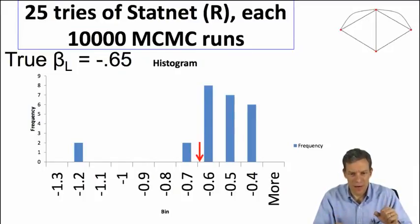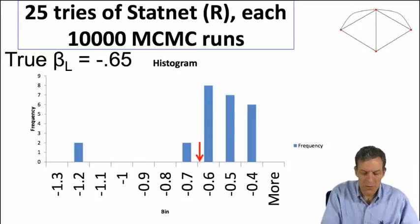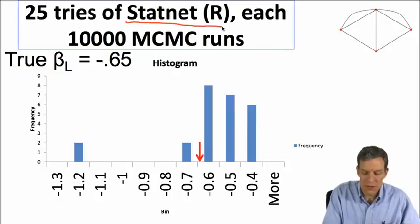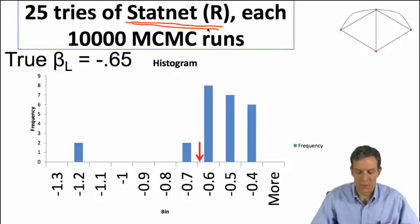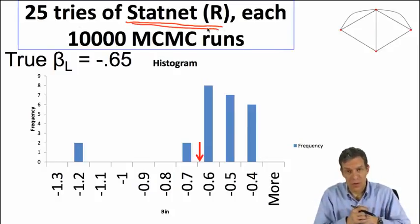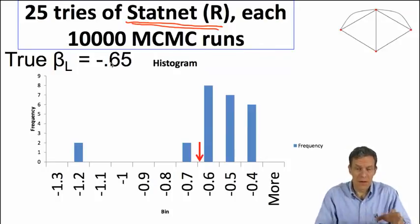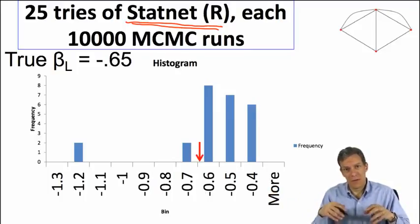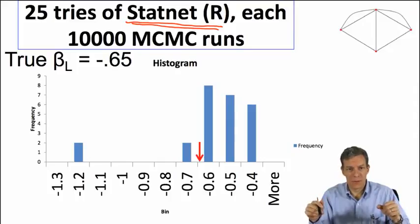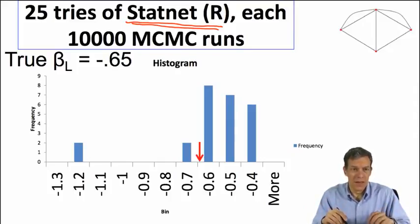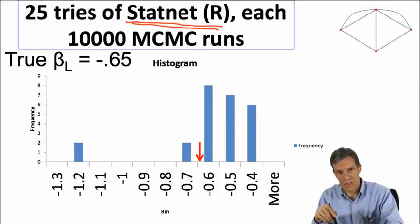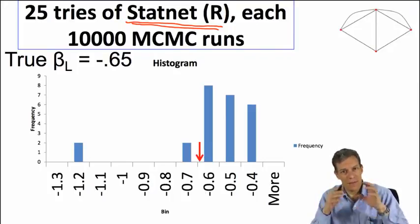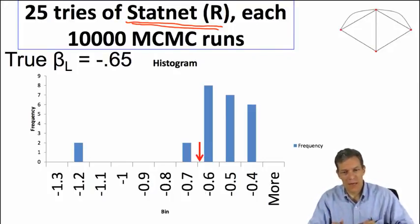So here's what you get if you run, say, StatNet, which you can download for free and actually we'll use in one of our exercises. Here, using 10,000 MCMC runs, so it's going through about 10,000 different iterations in searching through the space of possible networks to estimate the denominator. And so here what we're doing is throwing the same network at the program and just having it re-estimated a bunch of different times.